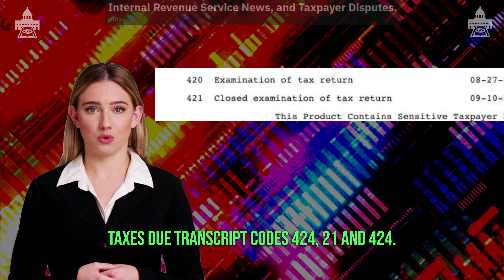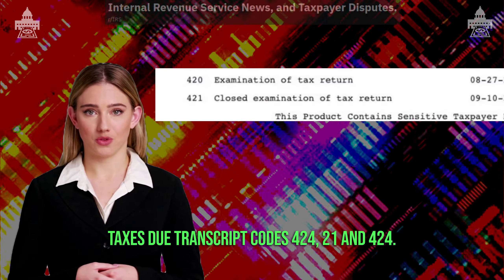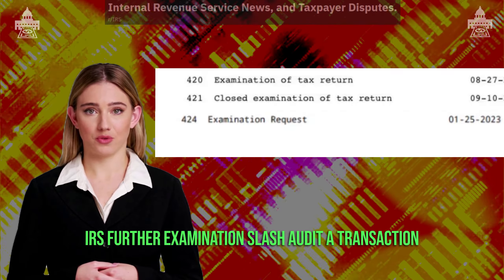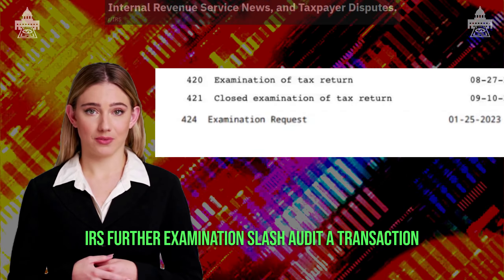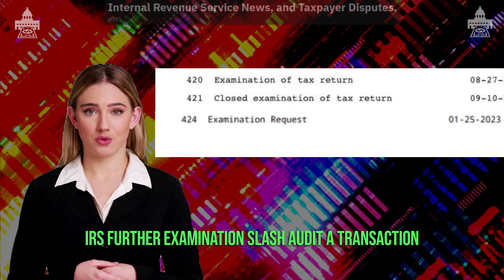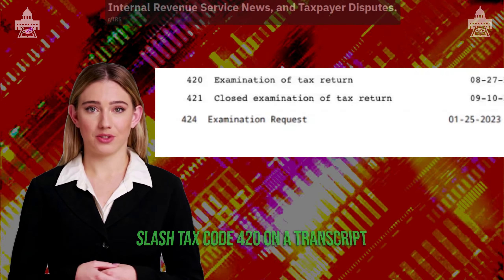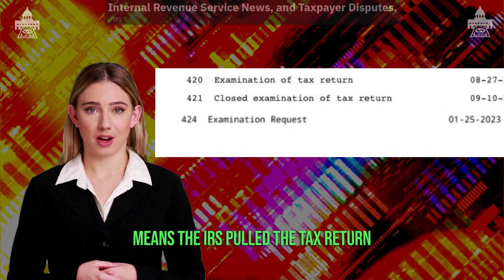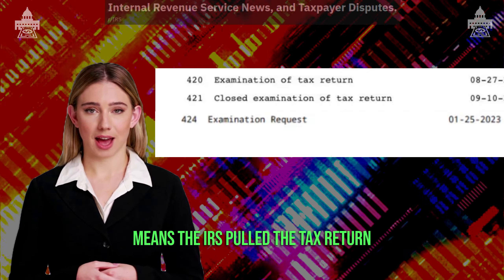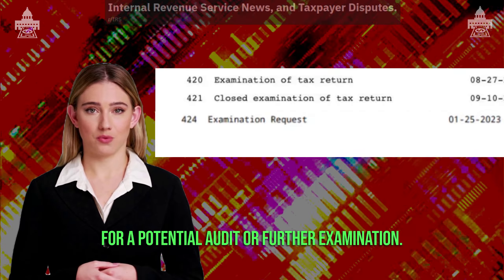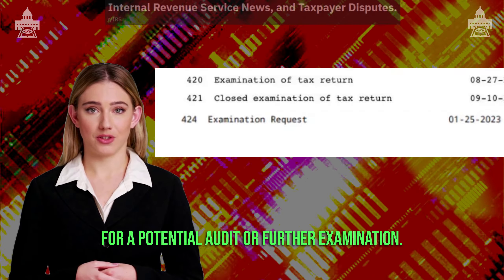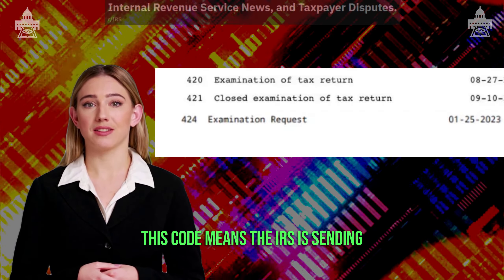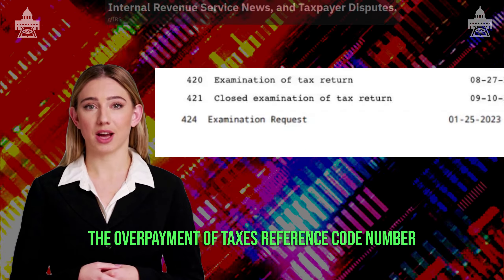Transcript codes 420, 421, and 424 relate to IRS further examination or audit. A transaction code 420 on a transcript means the IRS pulled the tax return for a potential audit or further examination. This code means the IRS is reviewing the overpayment of taxes.